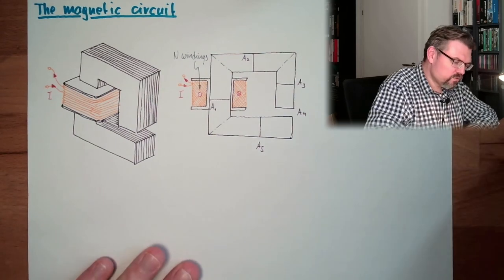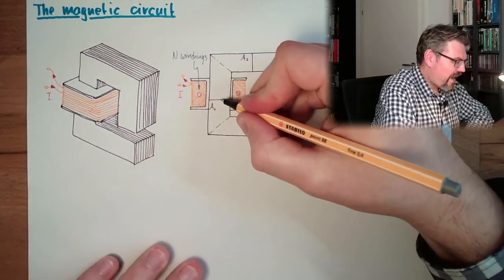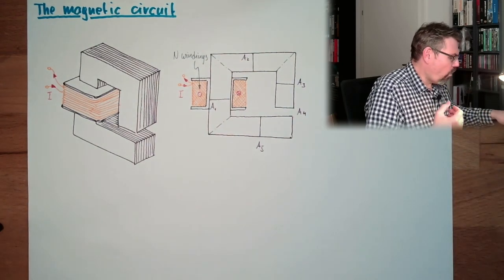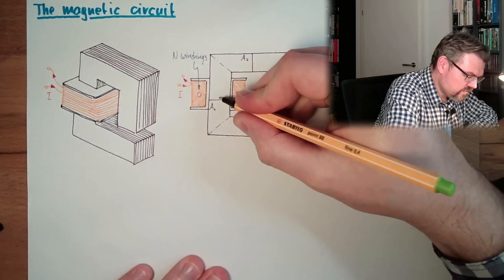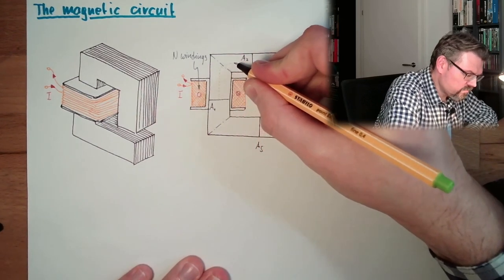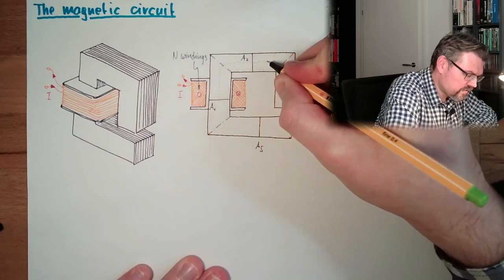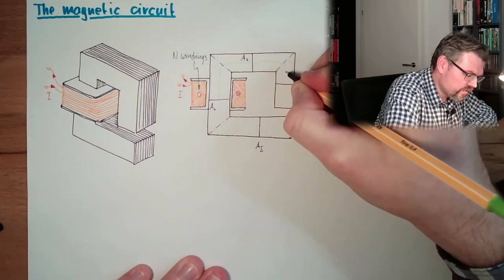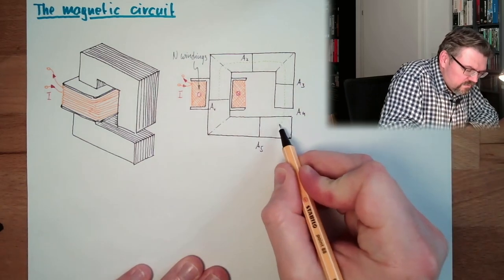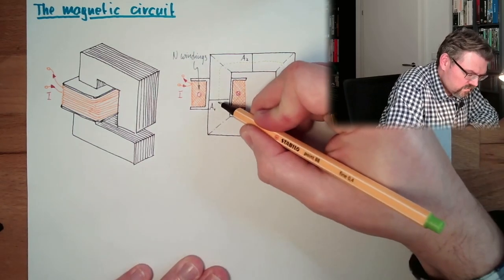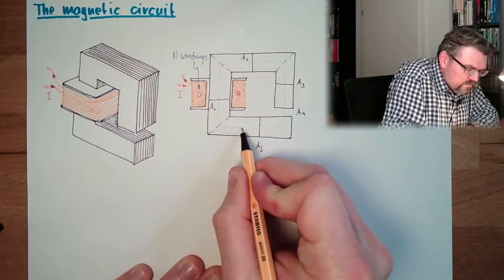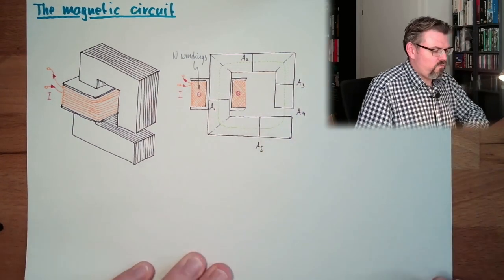If I want to draw a middle line of our flux, then I would say it would look like that. This is how our flux will pass through. So this is the middle length of our flux line, the average.